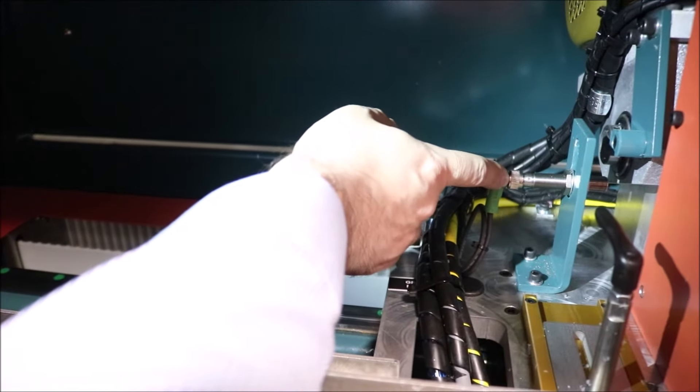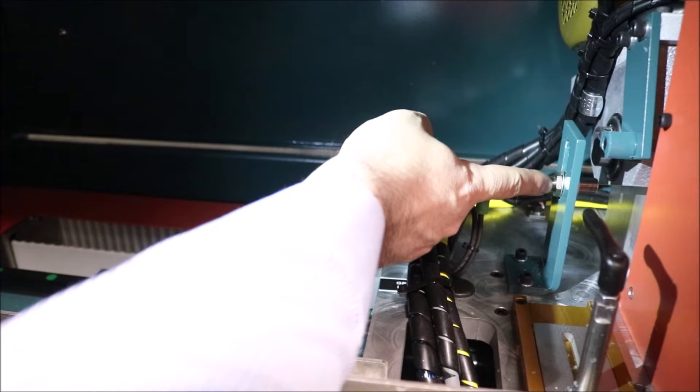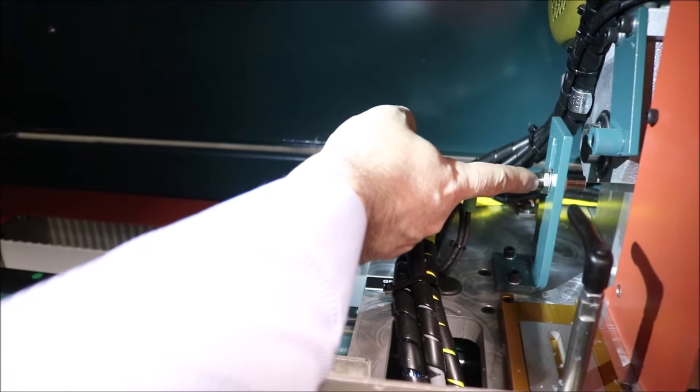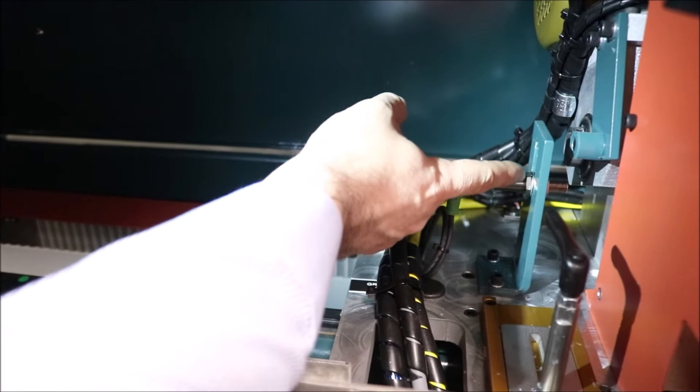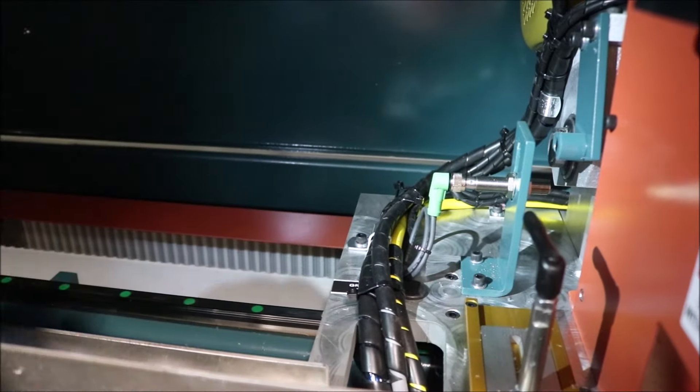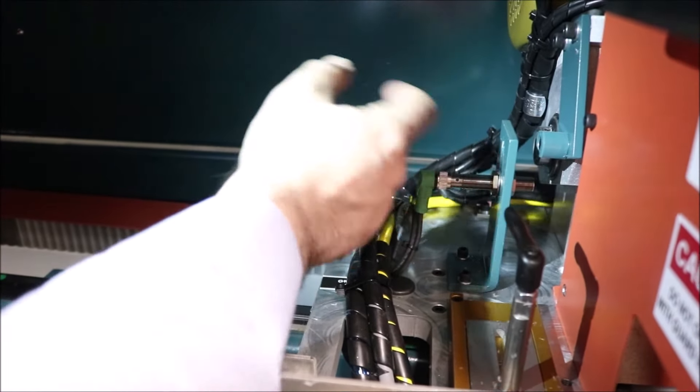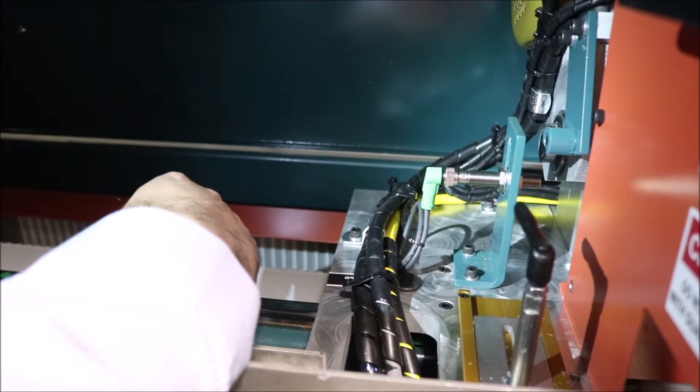Adjusting the switch, or in this case the sensor, is by undoing this holding bracket and you can bring it up or down. Once you have adjusted, make sure that this is properly tightened because you don't want it to get loose while in operation.